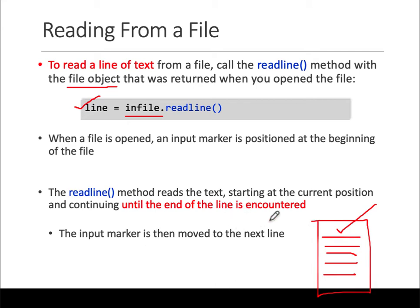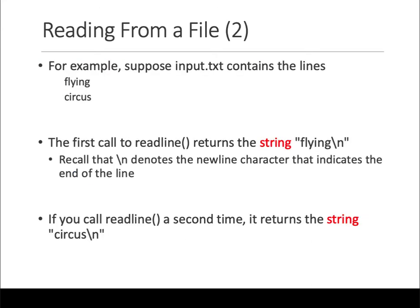The cursor is initially at the beginning. When you read a line, it hits the newline character and your cursor moves to the next position. When you read the next line, it reads that line. If you need to read the whole file, you need to write some kind of loop - like a while loop - that keeps looping while you haven't reached the end of the file.